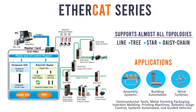Line, tree, star, or daisy chain — EtherCAT supports almost all topologies, and the combination of lines and branches is particularly beneficial. The connected ports can not only create branches but also directly integrate various IO modules, so no additional switches or active infrastructure components are required.